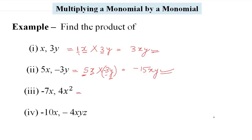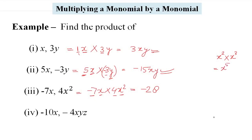Third example: −7x और 4x². That is equal to −7x multiply by 4x² = −7 × 4 = −28. Now x multiply by x²: exponent का rule है कि जब base same हो तो multiply की case में power add हो जाती है। जैसे x² × x³ = x⁵. यहाँ x¹ × x² = x³. So answer है −28x³.